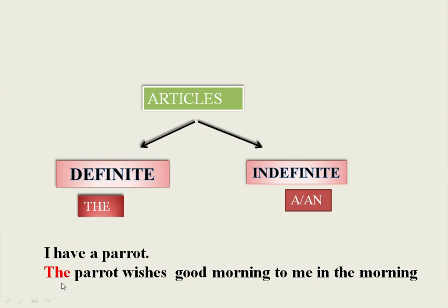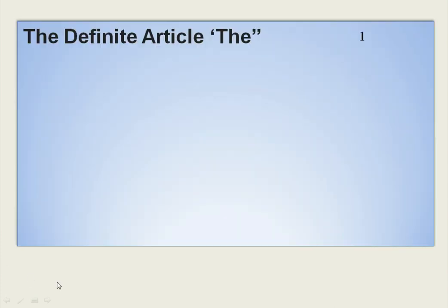But in the second sentence, we find the definite article 'THE' before the word parrot. 'THE parrot' means we are talking about that parrot that we have already referred to or already talked about. At first, the parrot is an indefinite one, whereas in the second sentence, the parrot becomes definite. Therefore, we use the definite article.